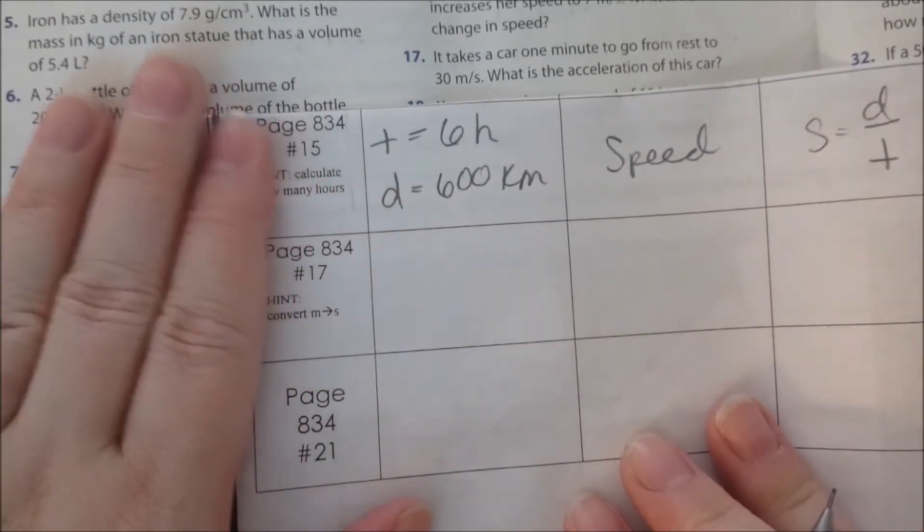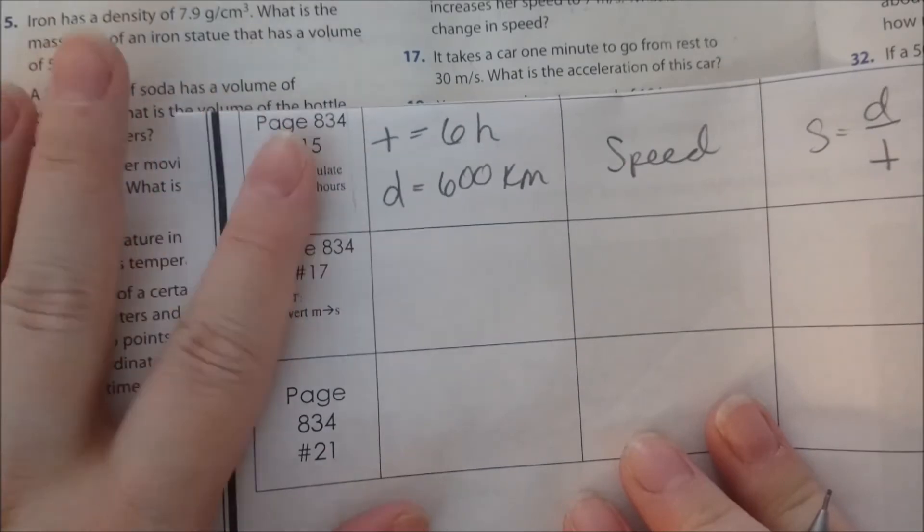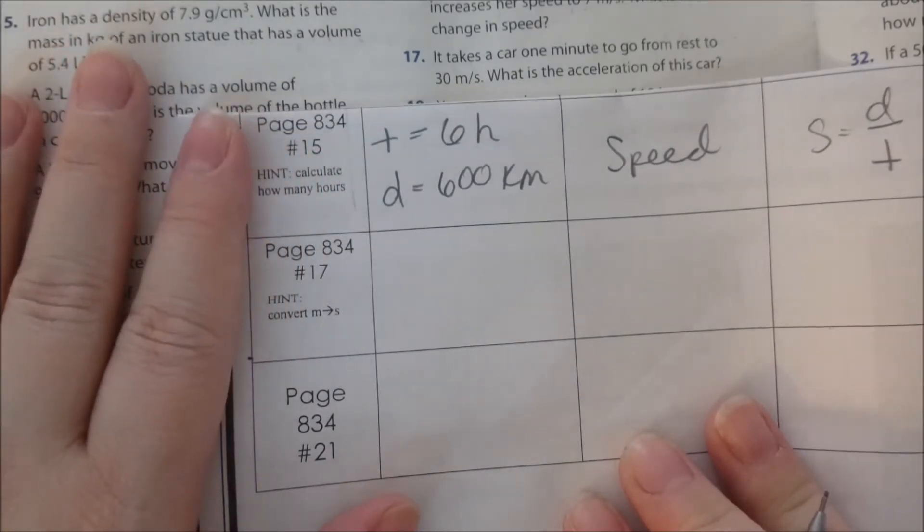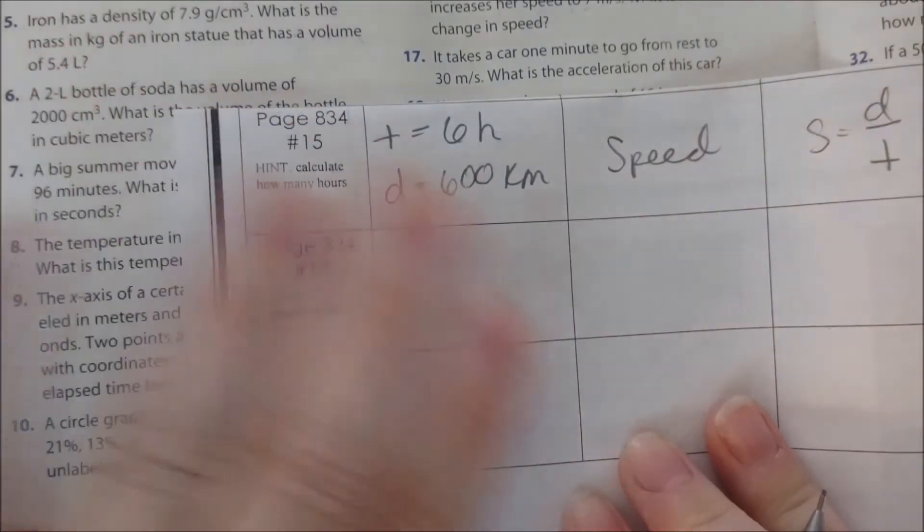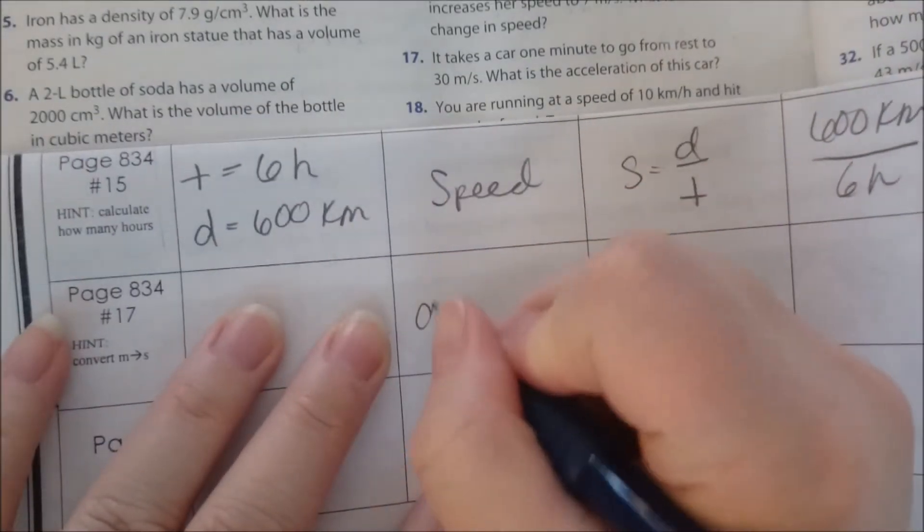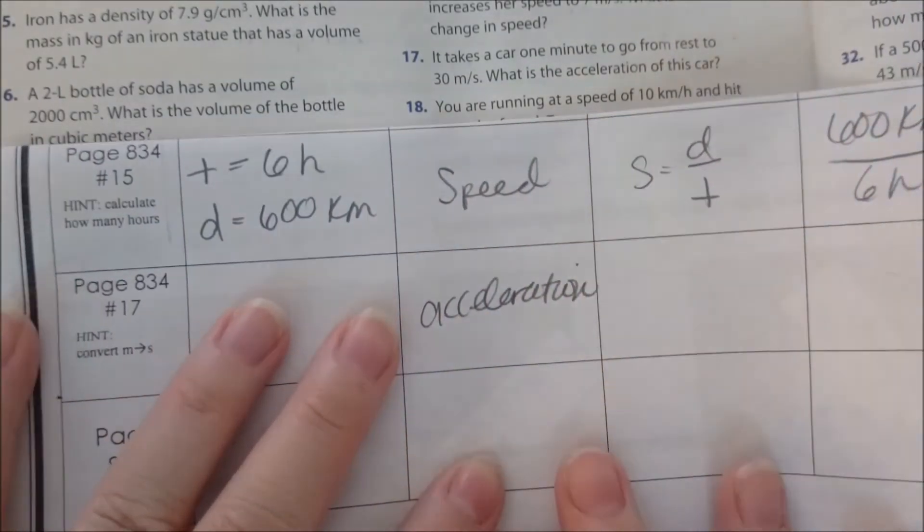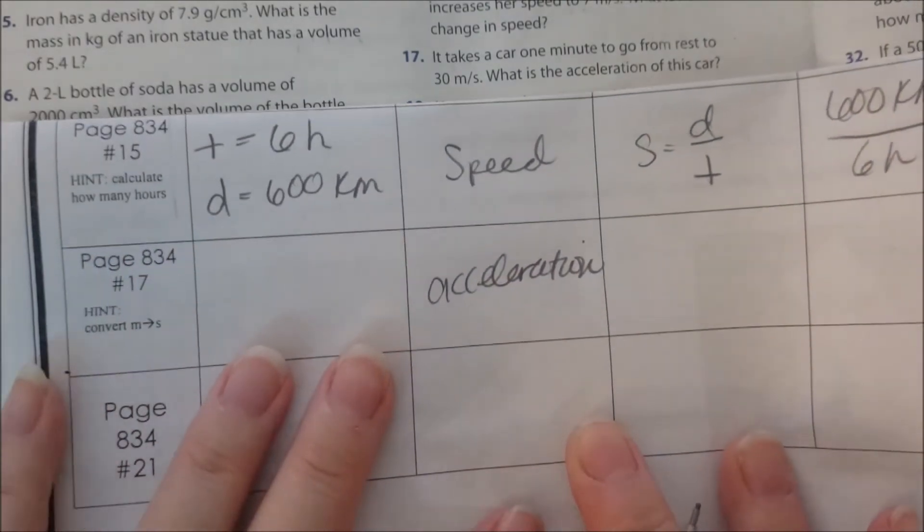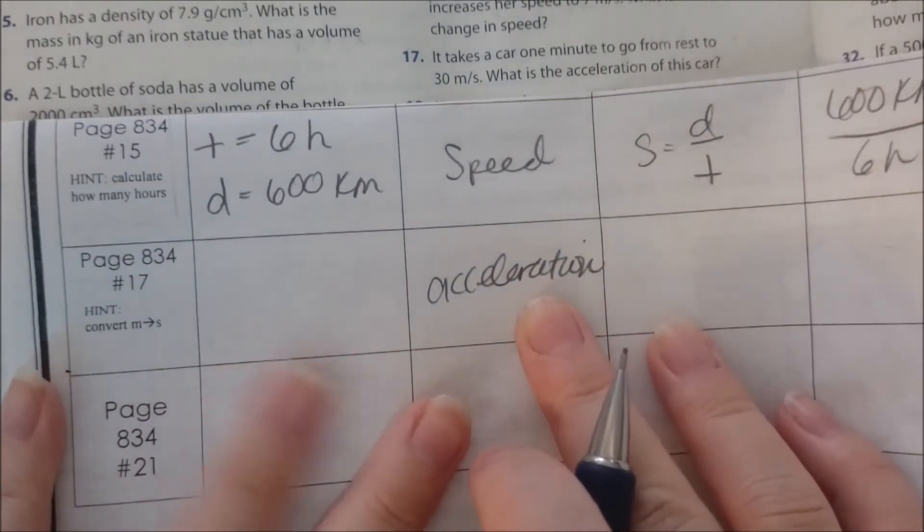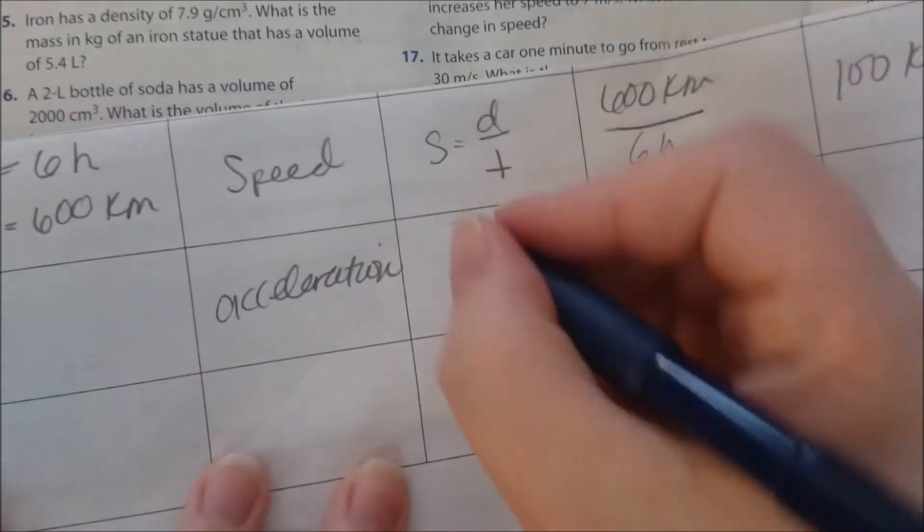It says it takes a car one minute to go from rest to 30 meters per second. What is the acceleration of the car? Now this time they're looking for acceleration, and if I'm looking for acceleration I have to use the acceleration equation.